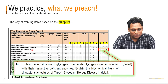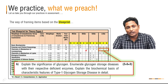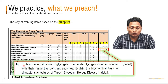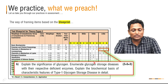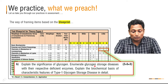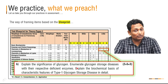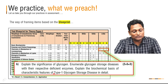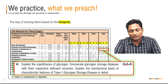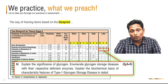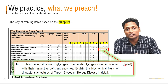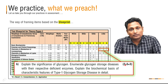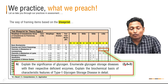Set a question like this: 'Explain the significance of glycogen' — this is 2 marks application. 'Enumerate glycogen storage diseases with their respective deficient enzymes' — because it is enumerate, it is completely recall, so 5 marks recall are covered. Then 'Explain the biochemical basis of characteristic features of Type 1 glycogen storage disease in detail' — this 3-mark question makes the student comprehend available knowledge and write the answer, so it comes under comprehension.